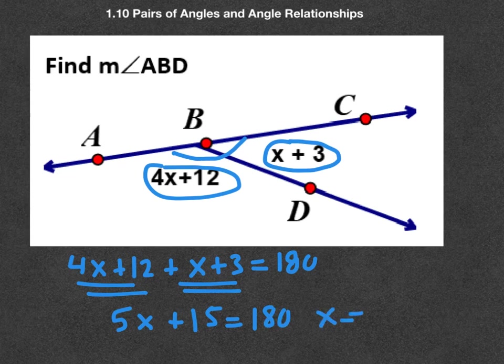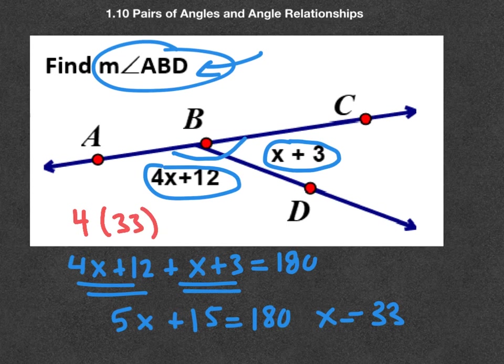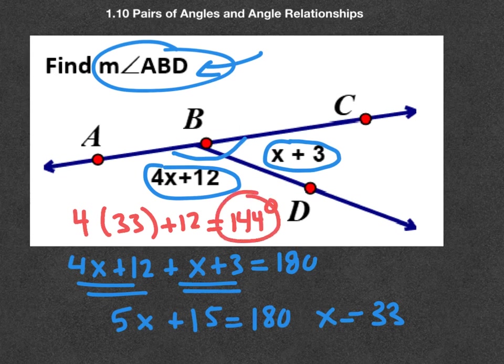And we solve this. And we get x equals 33. Now, back here at the question, notice it wants the measure of angle ABD, which happens to be this angle here. So we are going to substitute in 4 times 33 plus 12. Happens to be 144 degrees. This is my answer, not x equals 33. Be careful to answer the question.